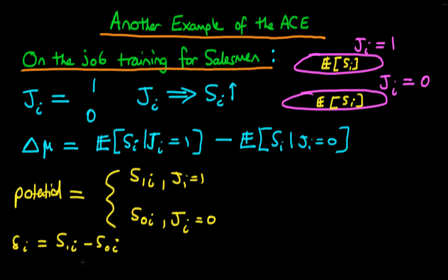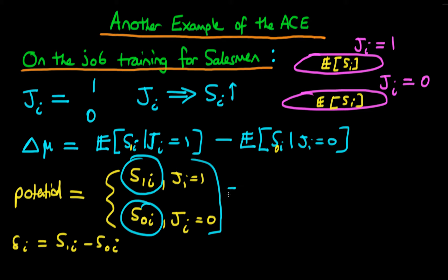What we're really interested in evaluating is, for that particular candidate, what is the difference between s1i and s0i, as this will represent the causal effect of on-the-job training. The problem is that in reality we only observe one of these two outcomes: we observe s1i if that candidate chose on-the-job training, and s0i if they didn't. So what we can do is look at our expression for delta_mu and change the first expression to the expected value of s1i given ji equals one, and the second expression to the expected value of s0i given ji equals zero.